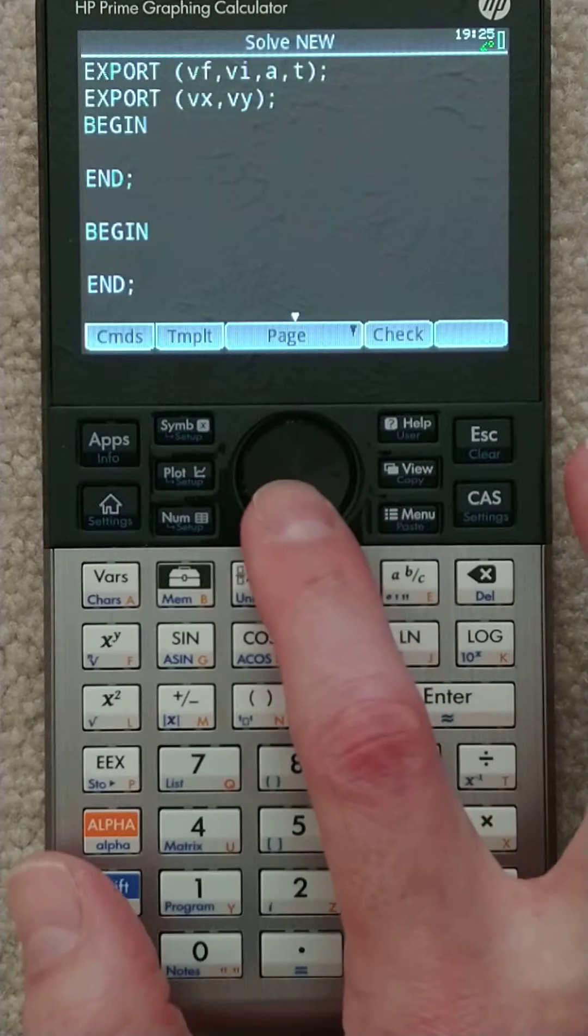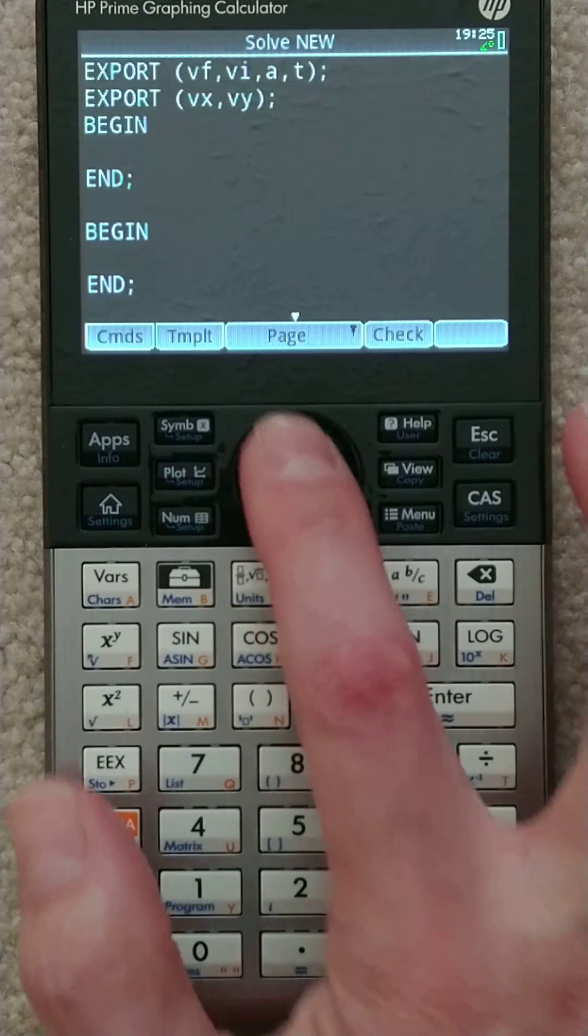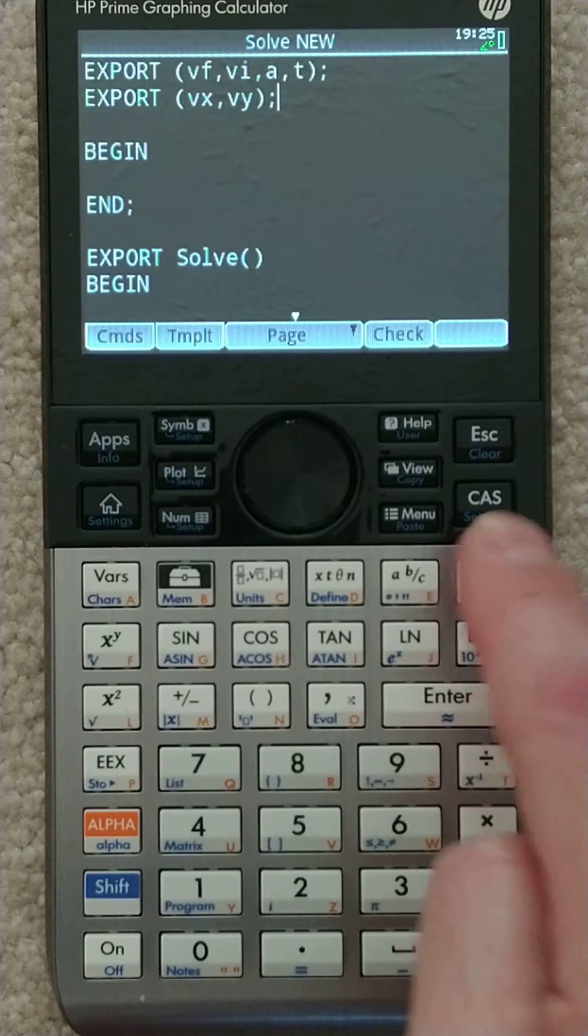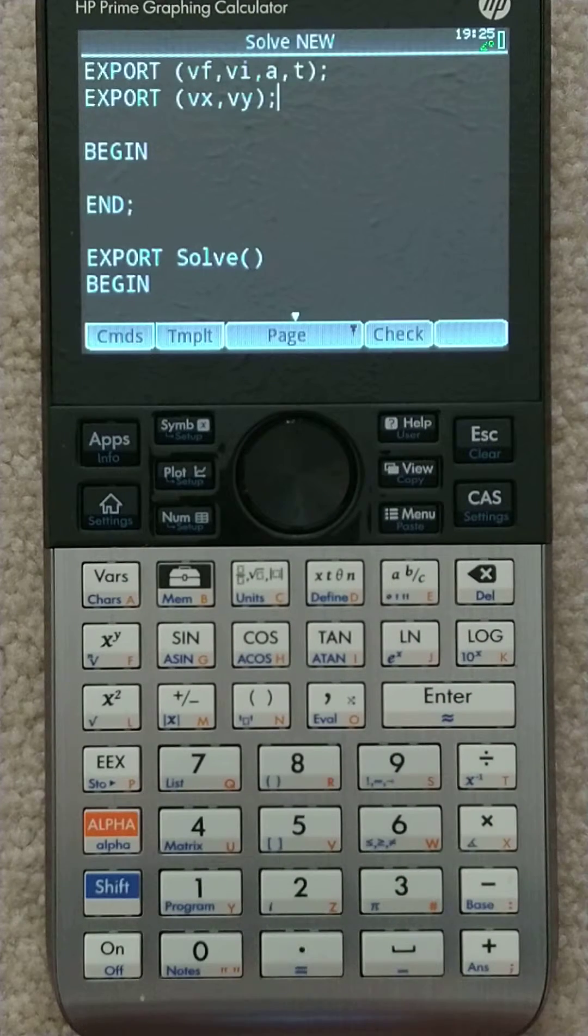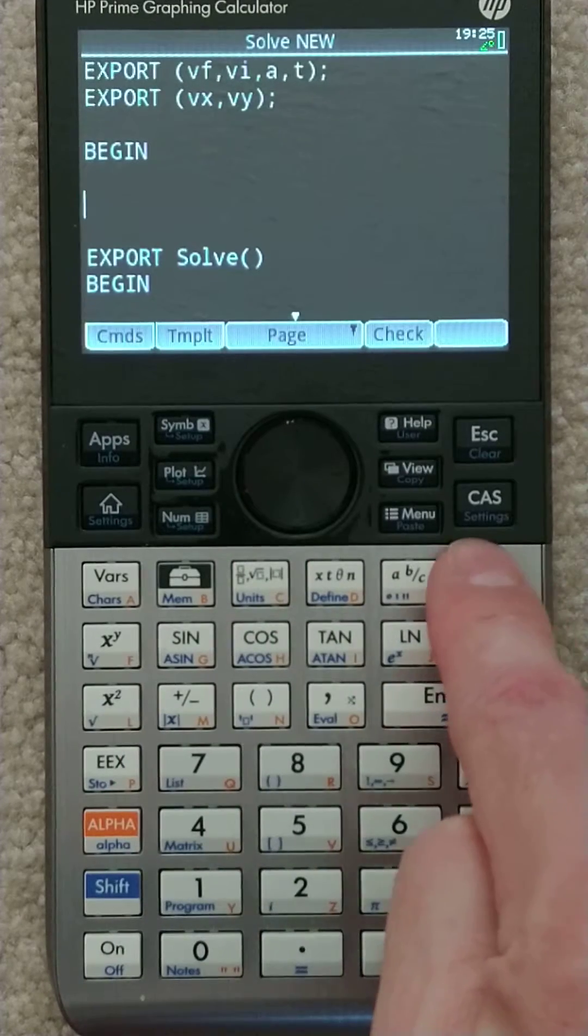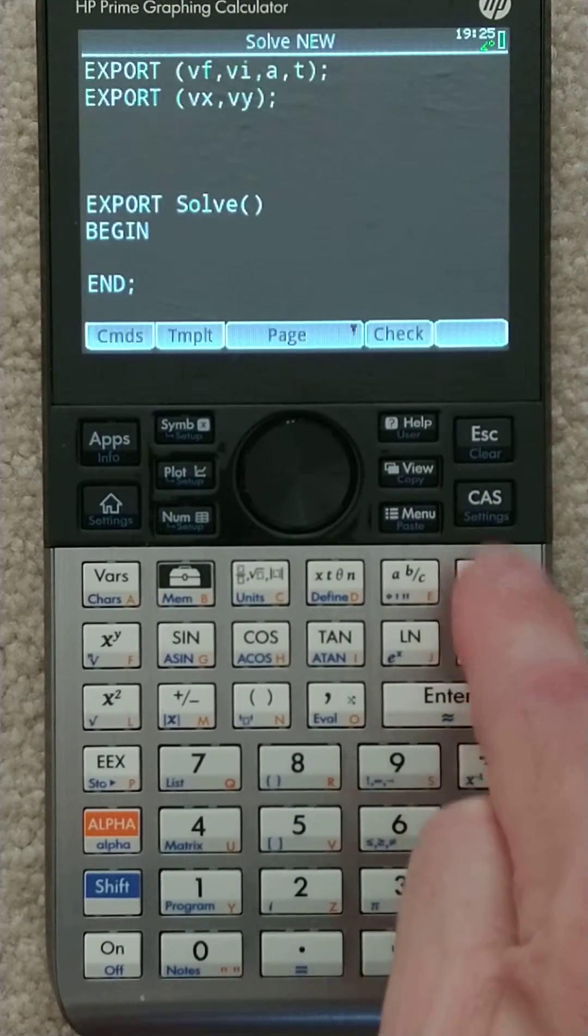Now, there is one problem here. We need to get rid of these lines here. The end and that begin. Those are, I'm pretty sure we, I know we don't need them. So let's just get rid of them. Okay. Now we have that. Actually, I've got another begin and end because I inserted that two of those exports. Get rid of those.